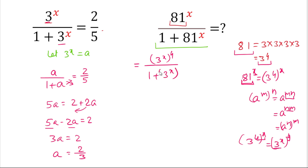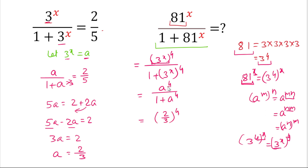Therefore we can write the expression as (3 to the power x) to the power 4, divided by 1 plus (3 to the power x) to the power 4. Since we let 3 to the power x equal a, we write this as a to the power 4 divided by 1 plus a to the power 4. Now we substitute the value of a, which is 2 by 3: so it becomes (2 by 3) to the power 4, divided by 1 plus (2 by 3) to the power 4.